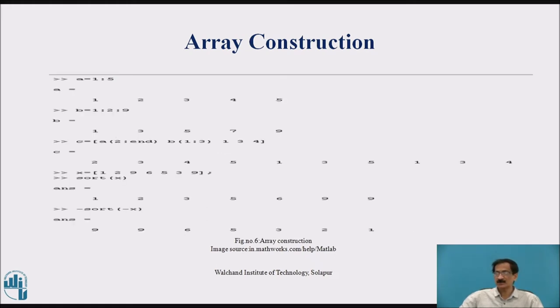This is again A, 1s to 5 will display numbers 1 to 5. B, 1 to 9 with a difference of 2 will give the odd numbers. Then C A 2 and B 1 column 3, 1, 3, 4 will create a matrix of C that will initially contain the elements of A matrix starting from the second position to the end, followed by B matrix from the element number 1, 2, 3 and lastly the numbers 1, 3, 4.